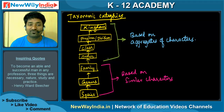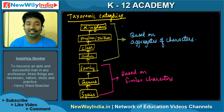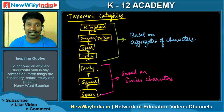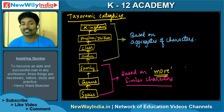If you have not watched the previous one or two videos, please try to watch those so that you will get a clear idea about what is taxonomic category, what is taxonomic hierarchy, and details about species, genus and family. Generally, these three categories — species, genus and family — are based on more similar characters.